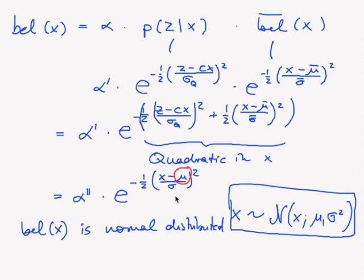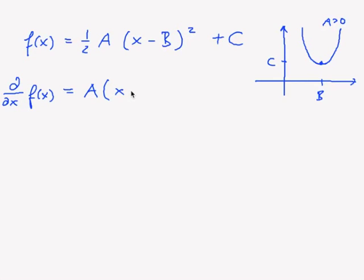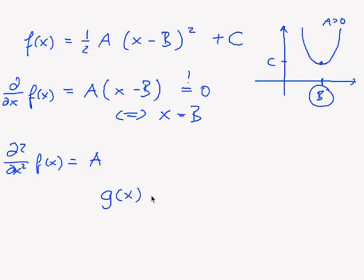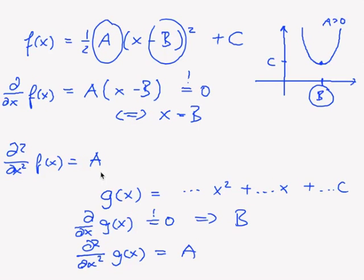Our first conclusion is: the belief of x is normally distributed. All we need to do is find the μ and σ values by rearranging those terms. For any quadratic function written in the form a(x − b)² + c, plotting it gives a parabola with minimum at b and minimum value c (for a > 0). Computing the first derivative gives a(x − b), and setting that to zero gives x = b. The second derivative gives a. So for any complicated quadratic function in x, we compute the first derivative, set it to zero to get b, then take the second derivative to get a.